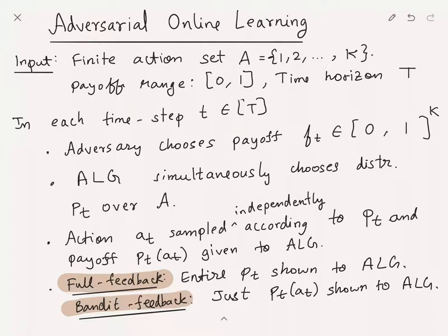Once the algorithm produces its distribution, we sample an action A_T independently from everything else from this distribution P_T. Then we give the payoff F_T of A_T to the algorithm, so the algorithm receives this payoff.